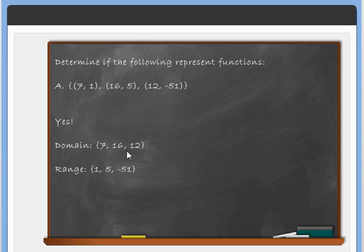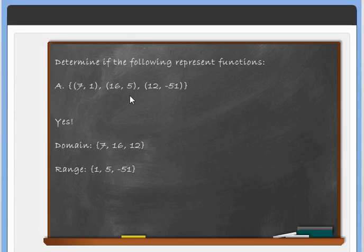So for example a, the domain is the x coordinates: {7, 12, 16} — the order doesn't matter, it's just a set. The range is the y coordinates: {1, 5, -51}.